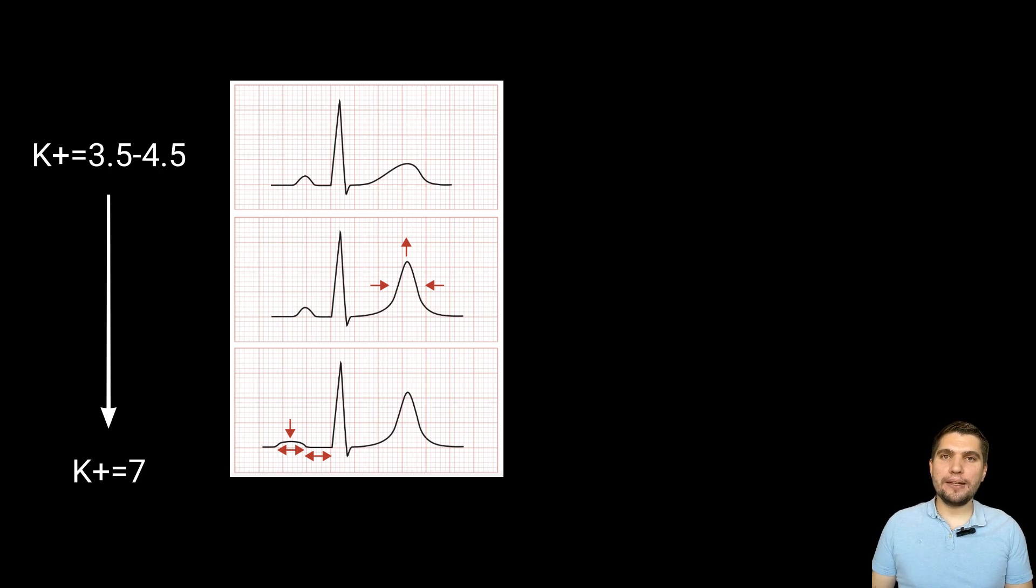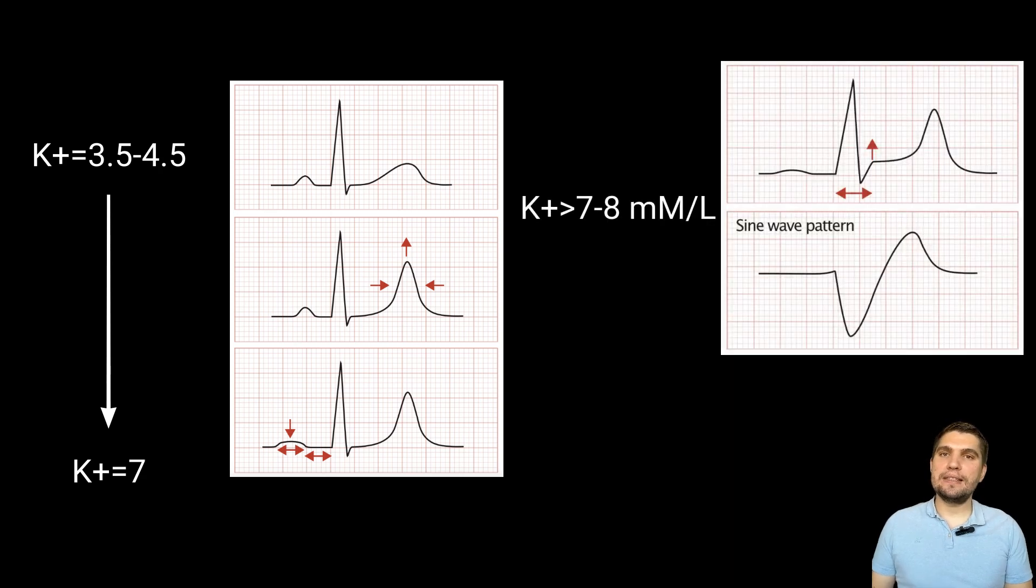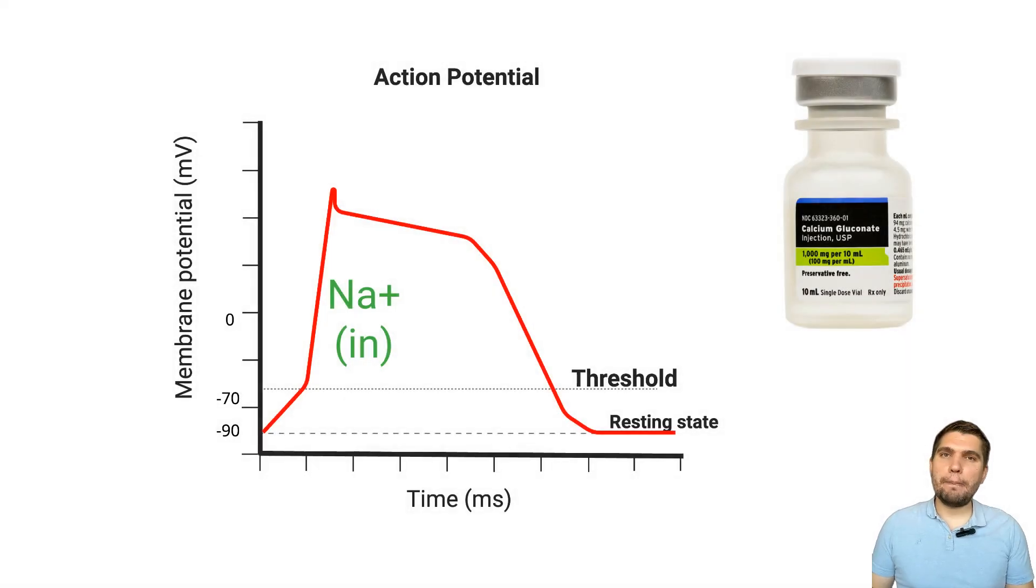Clinically, watch out for these ECG red flags indicating severe hyperkalemia: widened QRS complexes, loss of P waves, development of the sine wave pattern. If you see these ECG changes, it's a direct indication to give calcium gluconate as soon as possible.